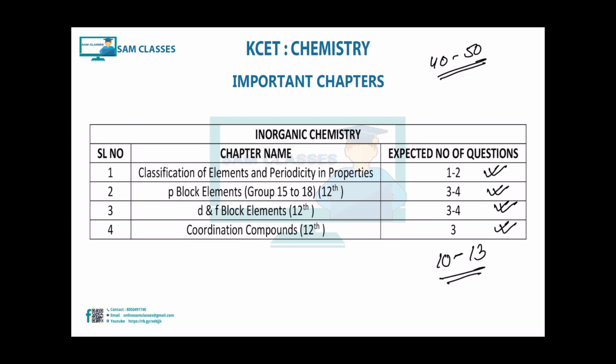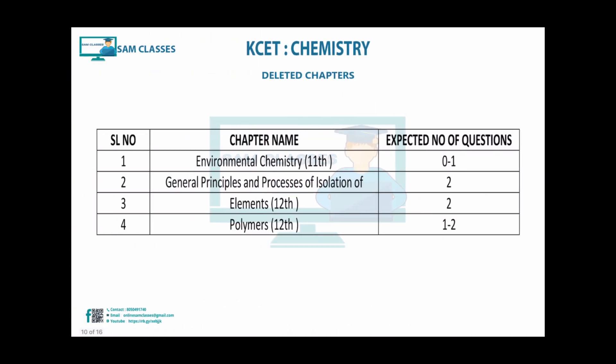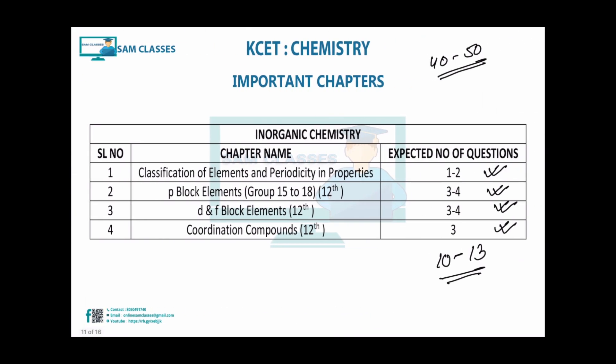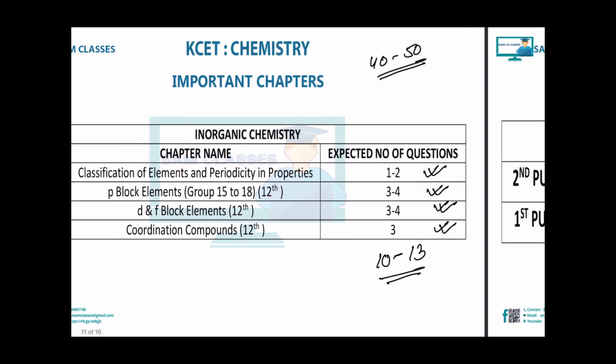These priority chapters can fetch you minimum 40 to 50 marks. You can analyze your available time - whether you have one and a half months, one month, or even 10 days - and make a study plan accordingly. Regarding deleted portions: environmental chemistry, general principles of isolation of elements, and polymers have been deleted. Since Karnataka KCET circular states deleted chapters won't appear, you can have faith in that. However, if you want to target 60 out of 60, you can prepare deleted portions too.